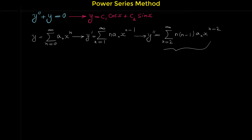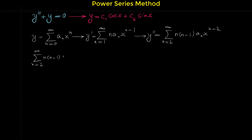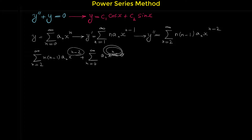Now we plug in y double prime and y into the differential equation. We have sigma n from 2 to infinity of n times n minus 1 aₙ x to the power of n minus 2, plus sigma n from 0 to infinity of aₙ x to the n, equals 0. At this step, we need to make the power of x the same in both series. Here the power is n minus 2, but in the second series it is n.